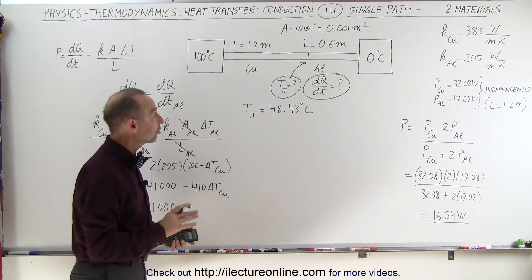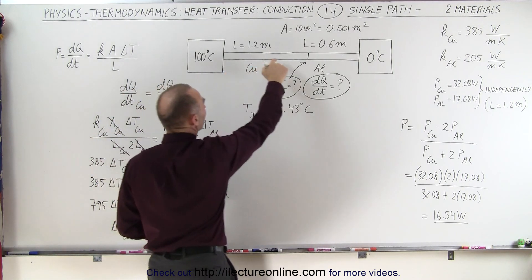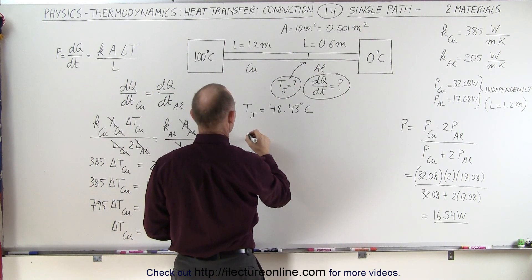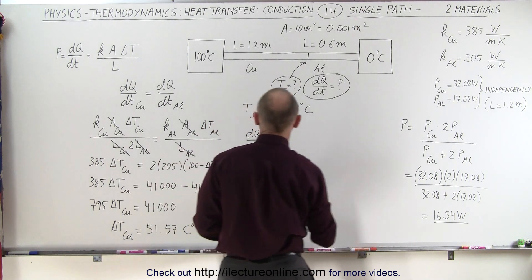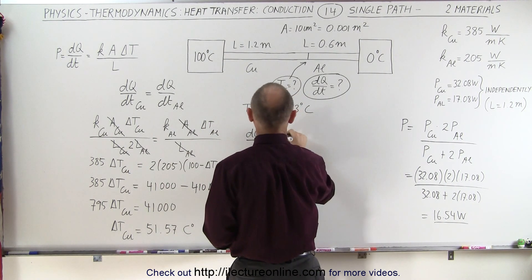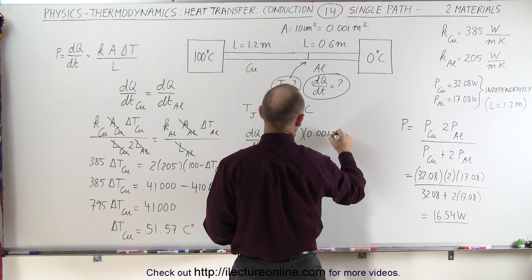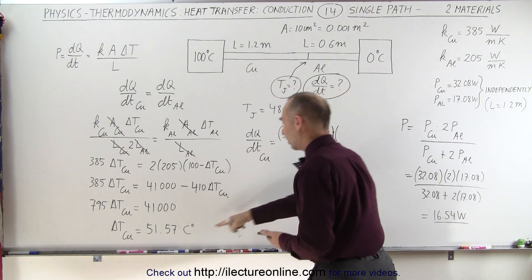Now that we have the junction temperature, we can now calculate the heat coming across the copper bar, which is the same as what goes across the aluminum bar. So we have the dQ/dt through the copper section, which equals K, which is 385, times the cross-sectional area in square meters, and times the difference in the temperature, which is 51.57,